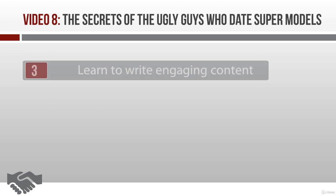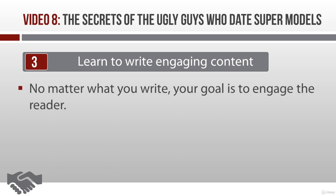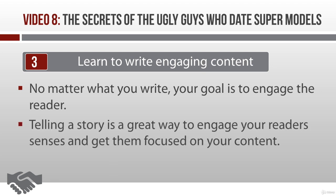The third thing you need to learn is how to write engaging content — moving past the headline and into the article, product review, or whatever other content it is. No matter what you're writing, your goal is to engage the reader. A really good way to do this is to find their emotional buttons and start pushing on them. One proven method: just tell a story. A good story that engages your reader's senses is going to sweep them away and get them 100% focused on your content. You can even go to Amazon and use the 'Look Inside' feature to read the first few pages of popular novels to see how writers draw readers into another world.